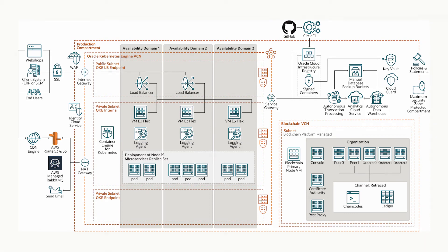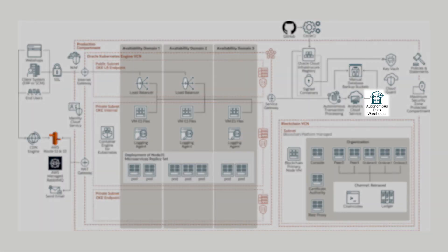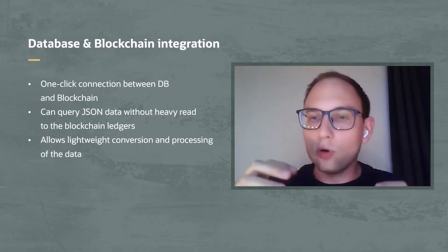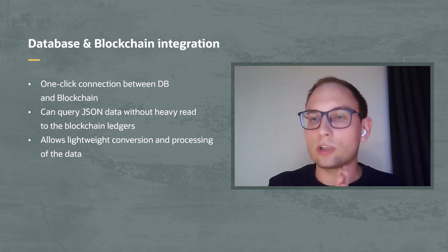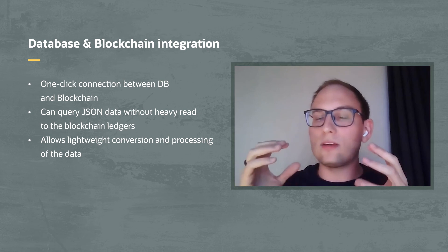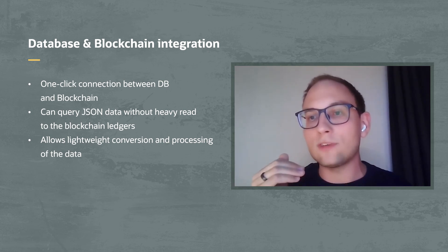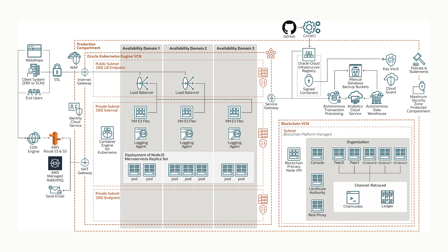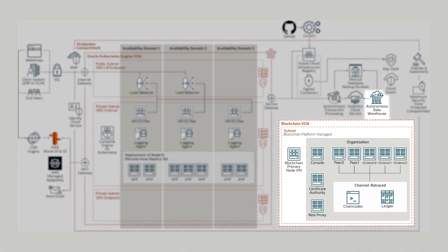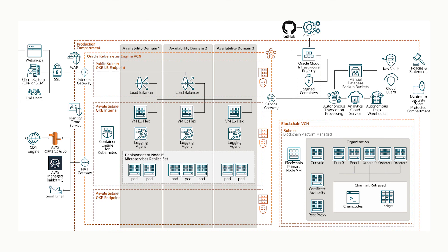Coming back to the autonomous data warehouse — this is the neat piece. Running through a blockchain sounds heavy: there are nodes, ordering services, and many other components that make it complicated. Making a call against it just to get data out is very compute-resource-intensive. What Oracle has done is create an in-cloud interface between the blockchain and autonomous data warehouse to connect them with one click — I just point it to that database and it synchronizes all the data over. Now in a data warehouse, using common PL/SQL, I can execute queries easily. Blockchain tables in this database — a great recent addition — allow me to convert the JSON however I want and process it further.